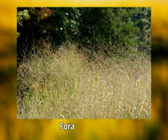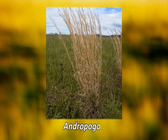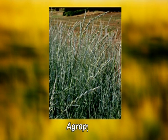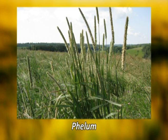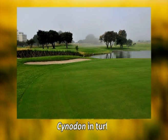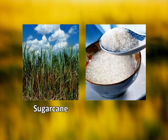Grasses are extensively used as livestock forage crops. Some of the major forage grasses are Andropogon, Agropyron, Phleum, etc. Grasses such as Cynodon and Agrostis are widely used in lawns and in making turfs. Sugar cane, which is basically a grass, is a major source of commercial sugar. Grasses as a source of sugar are also used in the fermentation of alcoholic beverages such as beer and whiskey.